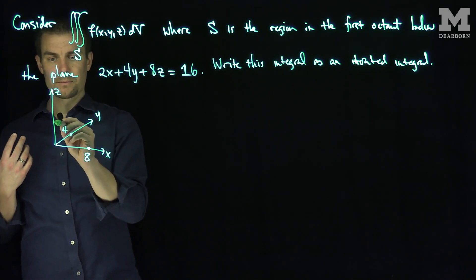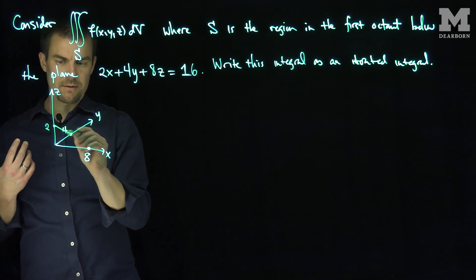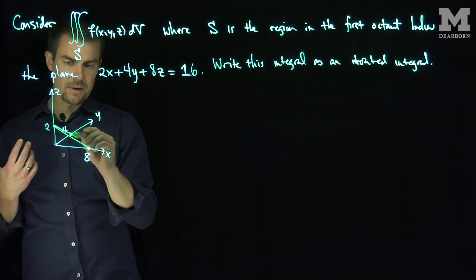And finally the point when z is equal to 2, z is equal to 2, that's the point on the plane. So what we have over here is we have that line segment, that line segment, and that line segment.